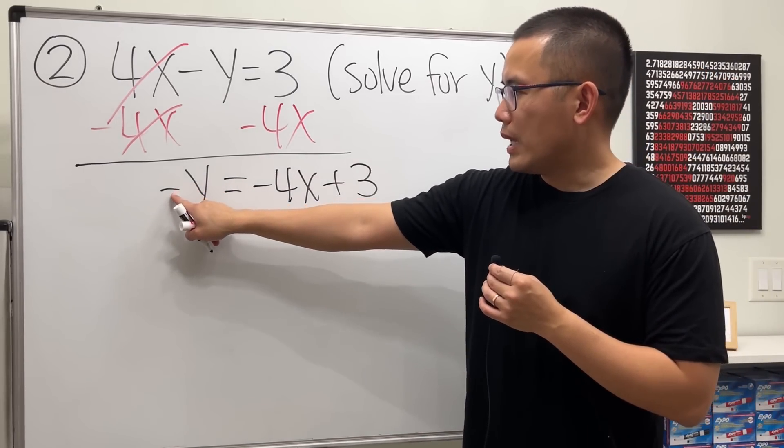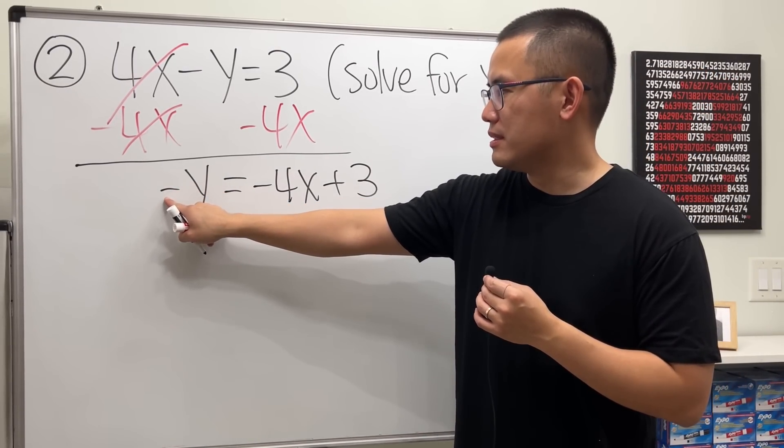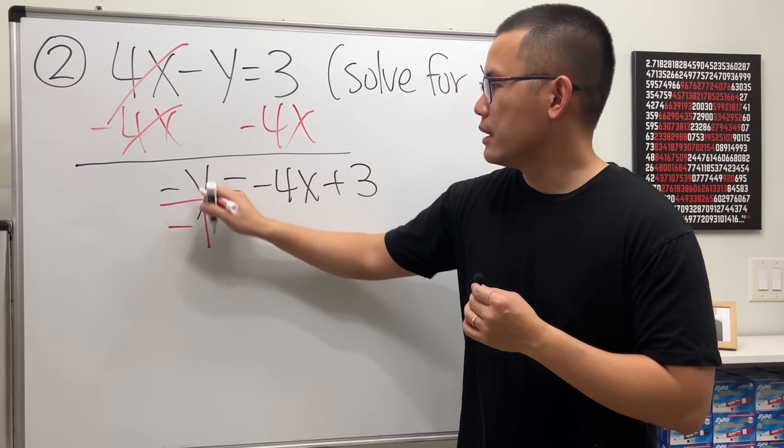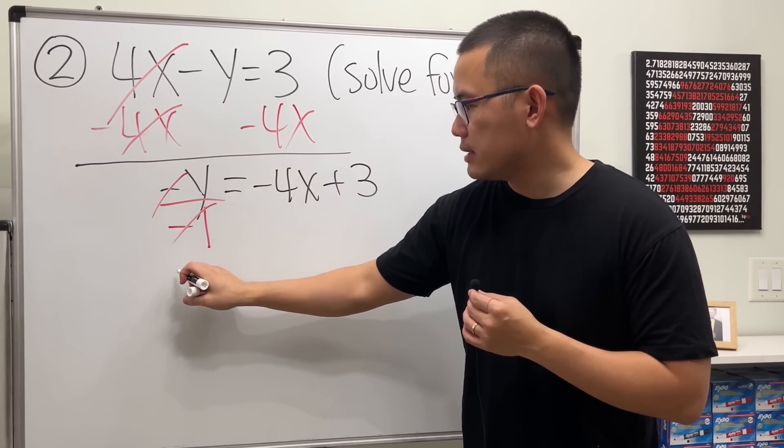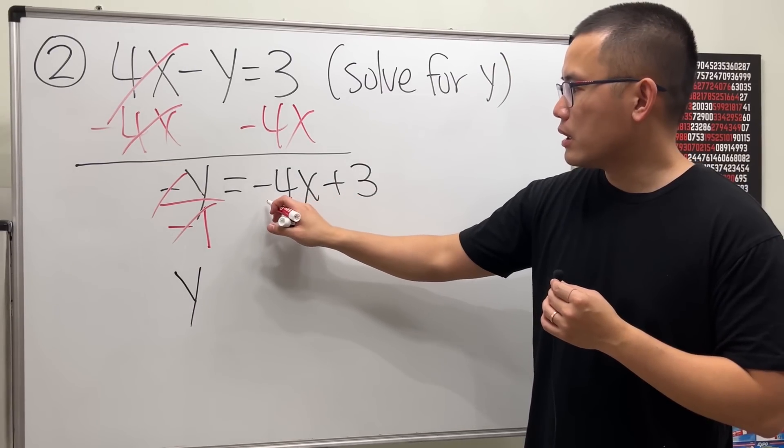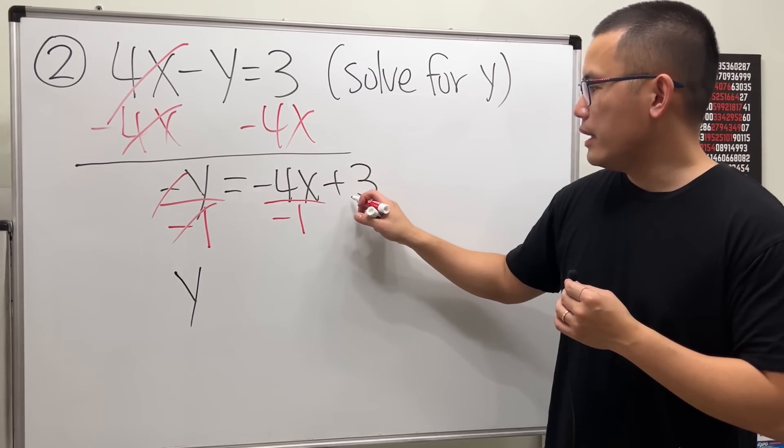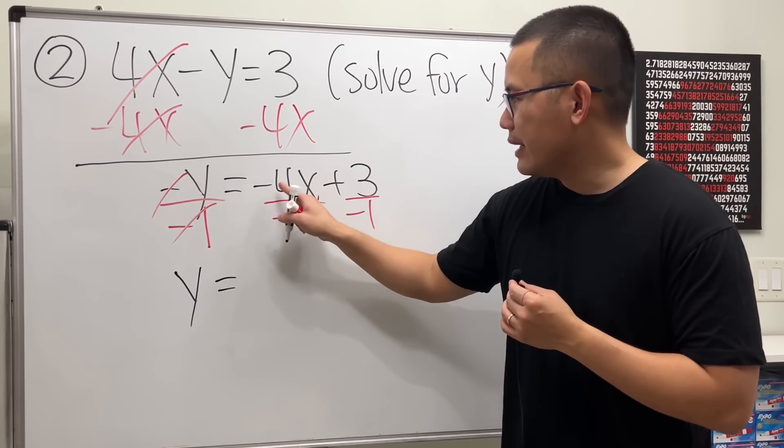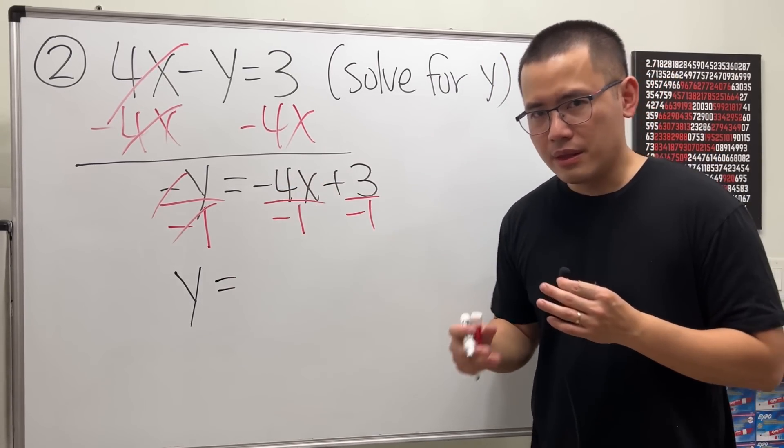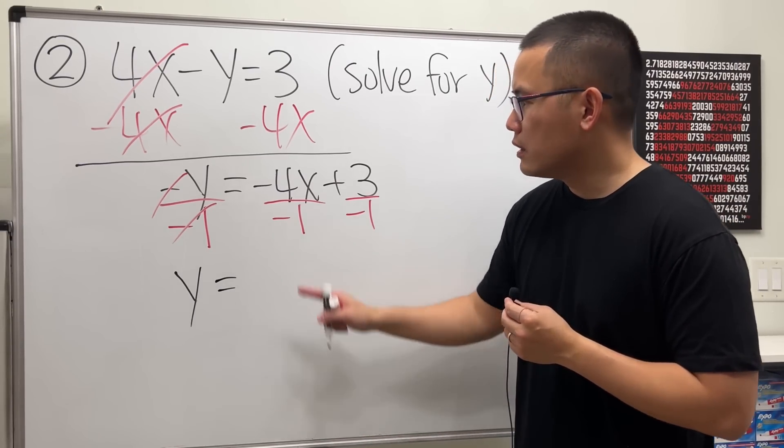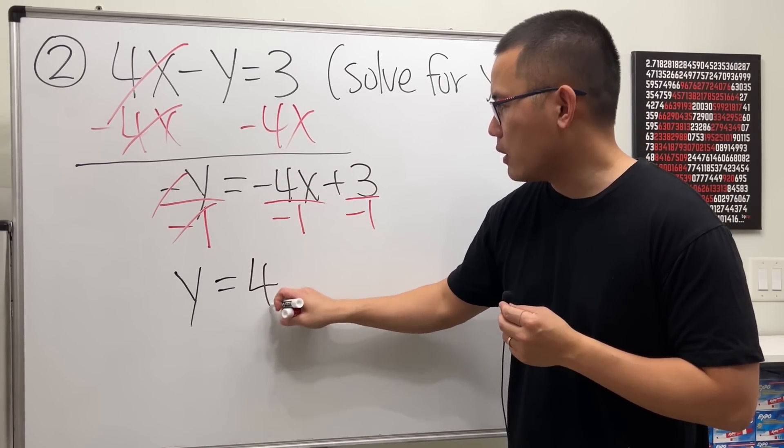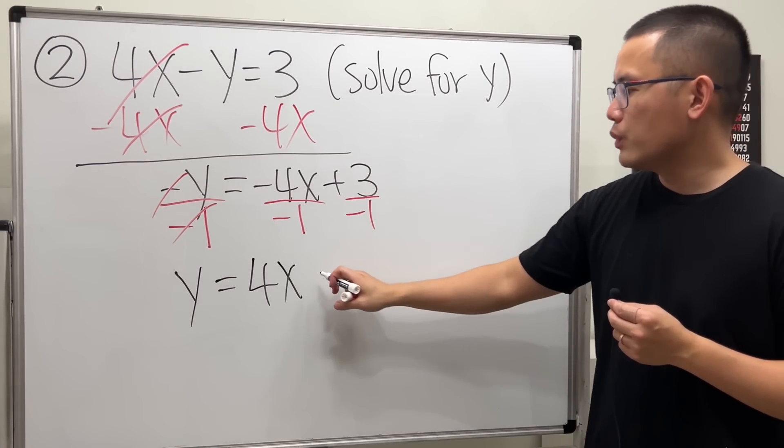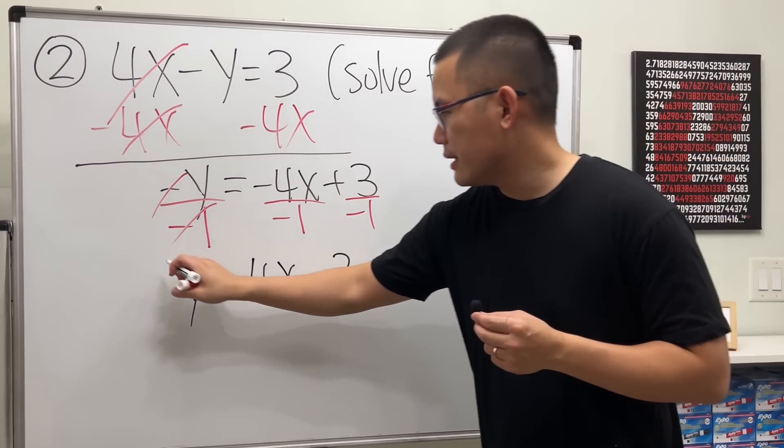Then we'll have to divide it by negative 1, because this is like negative 1 times y. So divide it by negative 1, so that will turn out to be a positive 1. And just like what we did earlier, divide this by negative 1, and also divide this by negative 1. So work this out. Negative 4 divided by negative 1. Negative divided by negative gives you positive, and that's going to be positive 4. Keep the x, and then 3 divided by negative 1, we get negative 3. And that's it.